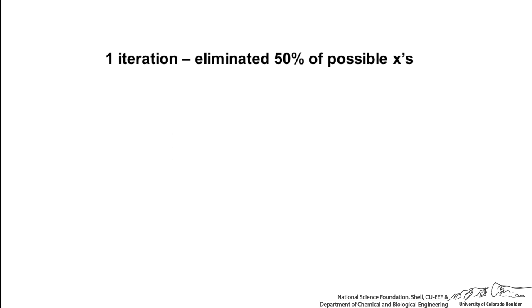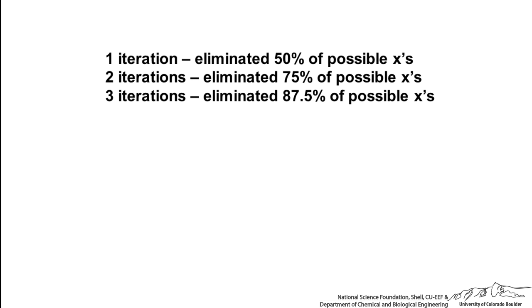So one iteration we eliminate 50%. Two iterations we have eliminated 75, three 87.5. And we can keep going and going. After ten iterations we have eliminated 99.9% of the possible x's. So our error is very small. So bisection method even in ten iterations you get a very very good approximation. Add on another ten iterations and you are down to one part per million.